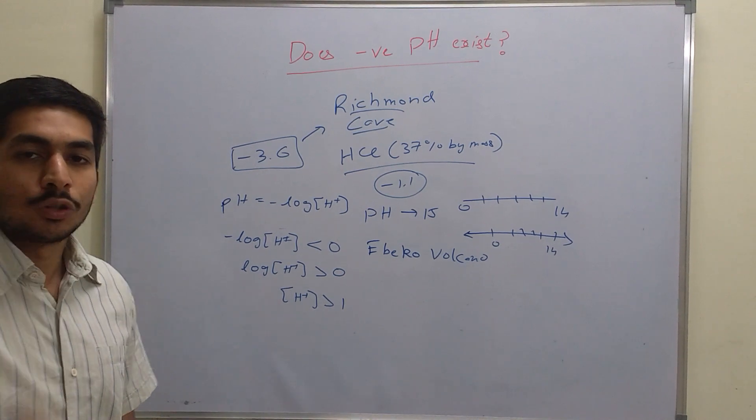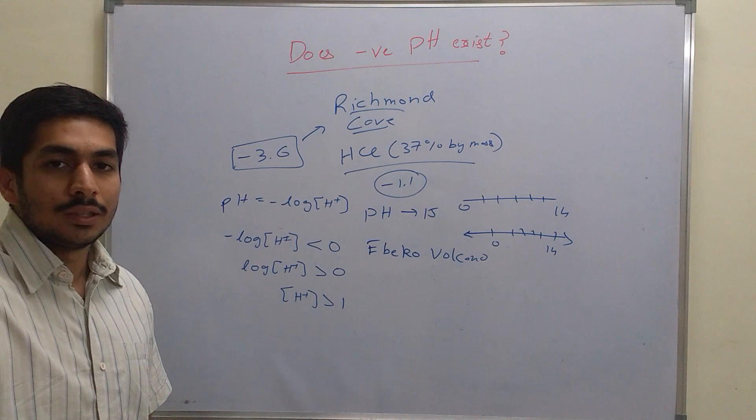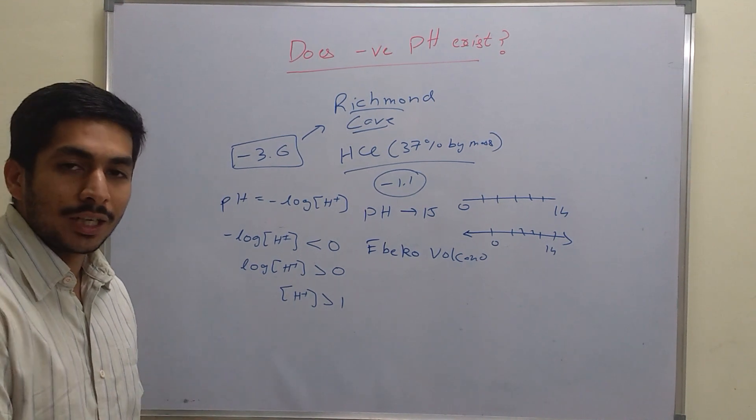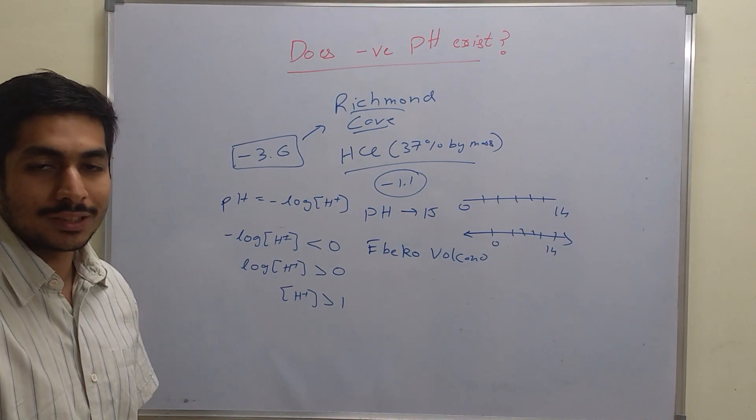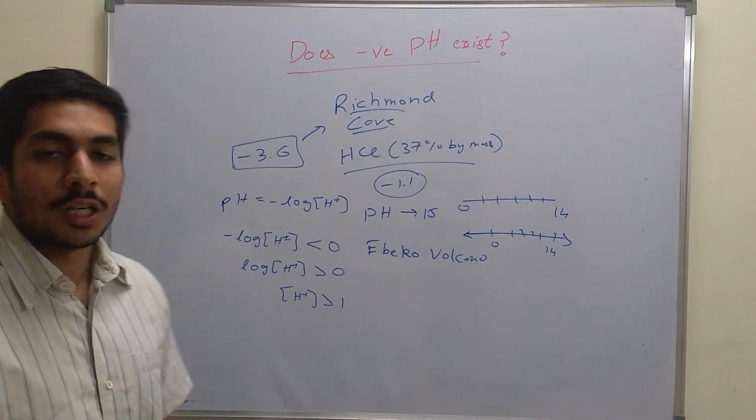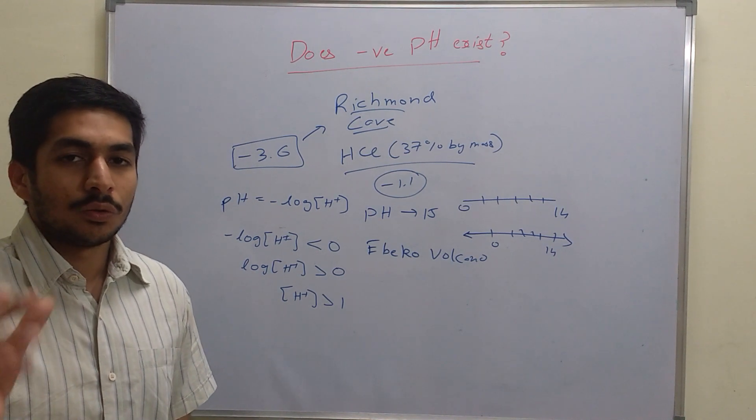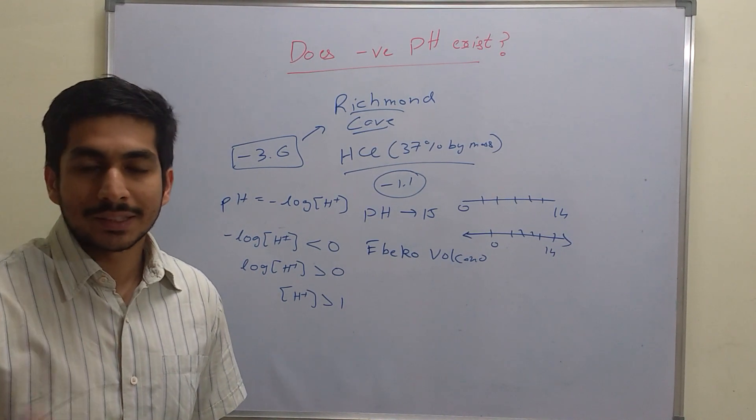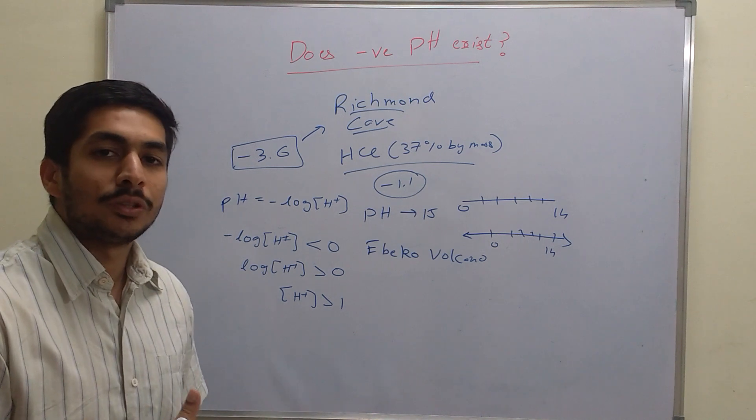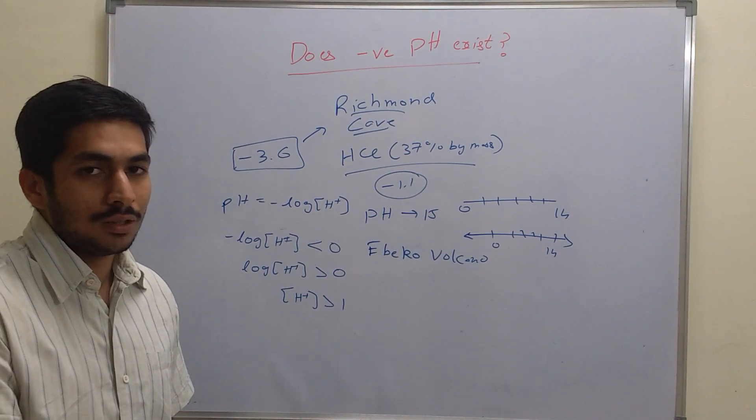Unlike many of you might have thought that negative pH does not exist, it in fact exists theoretically and practically. It is very common to encounter a pH less than 0 or greater than 14. In this video I have busted the myth that pH ranges from 0 to 14. It does in fact exist beyond that as well.